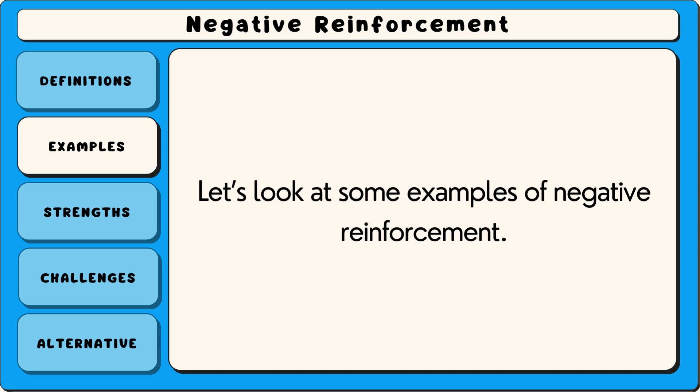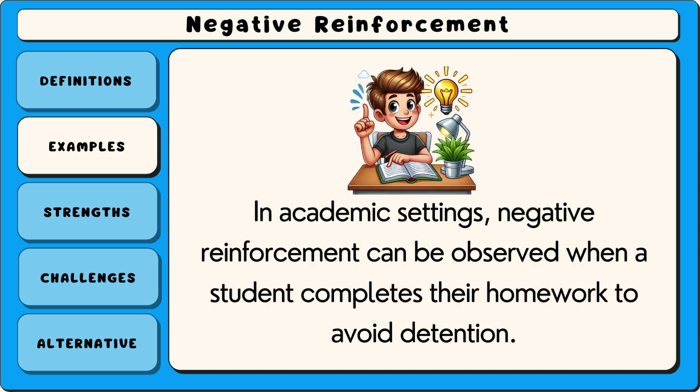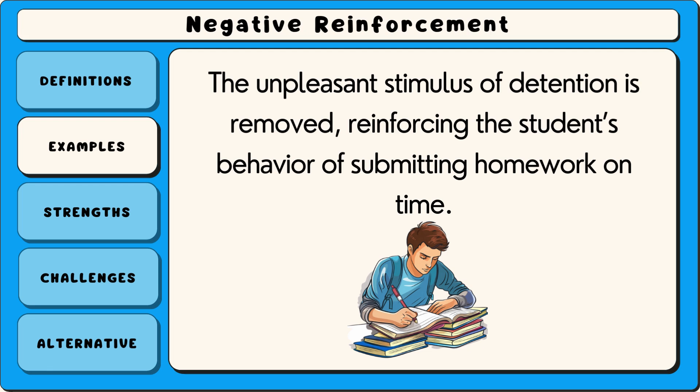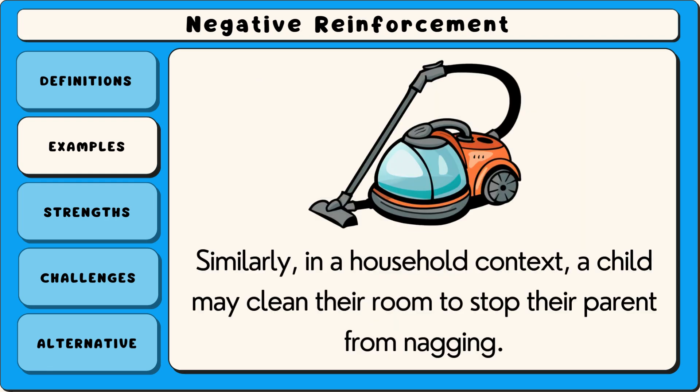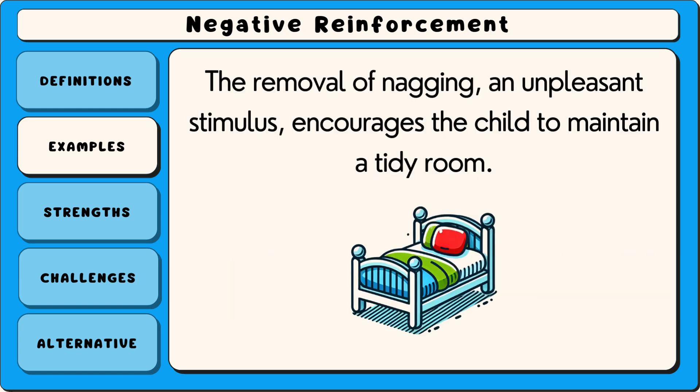Let's look at some examples of negative reinforcement. In academic settings, negative reinforcement can be observed when a student completes their homework to avoid detention. The unpleasant stimulus of detention is removed, reinforcing the student's behaviour of submitting homework on time. Similarly, in a household context, a child may clean their room to stop their parent from nagging. The removal of nagging, an unpleasant stimulus, encourages the child to maintain a tidy room.